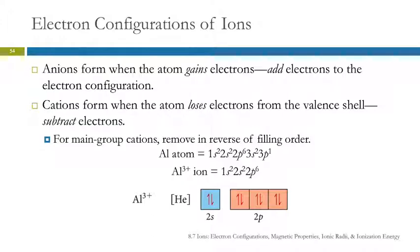Those electrons are subtracted from the valence shell. For the main group elements, for the cations, you remove electrons in reverse of the order that they filled. So aluminum fills 1s², 2s², 2p⁶, 3s², 3p¹.